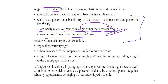If you look at what a residence is, please note this so you're not caught out if somebody uses a boat, for example. A residence is defined as any structure, including a boat, a caravan or mobile home, which is used as a place of residence by a natural person, together with any appurtenance belonging thereto. So it's not just fixed homes in a suburb or town — it can also include a boat or a caravan or a mobile home, as long as that is used as a primary residence.